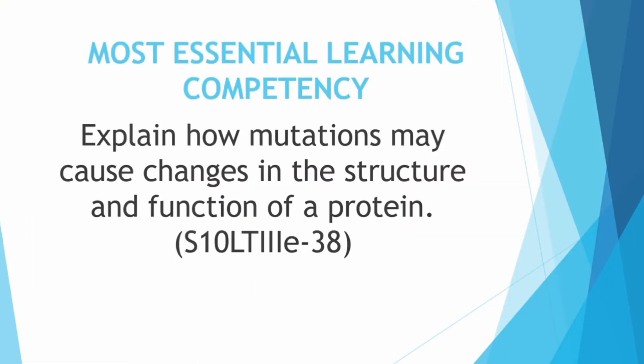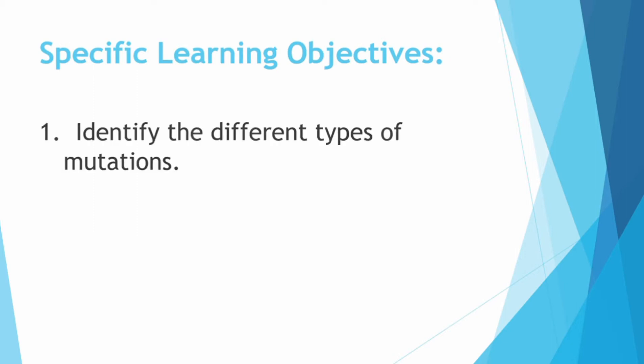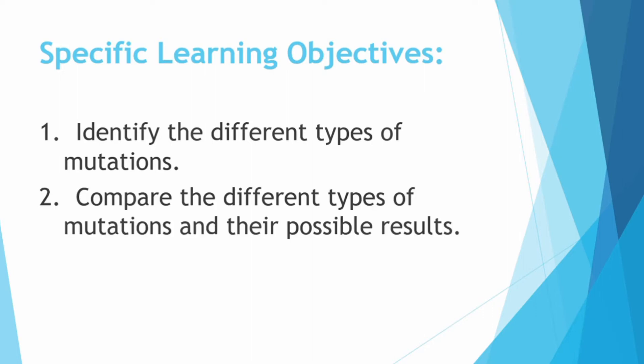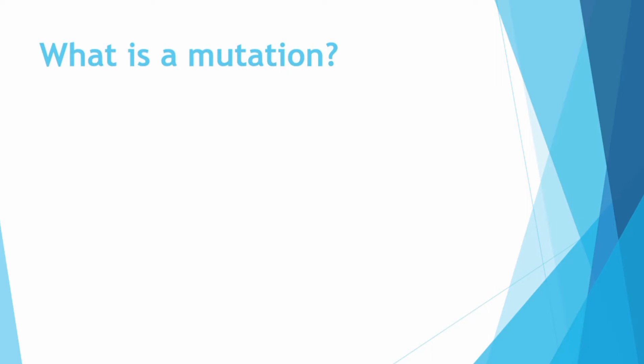This is our most essential learning competency: explain how mutations may cause changes in the structure and function of a protein. We have our specific learning objectives. First, identify the different types of mutations. Second, compare the different types of mutations and their possible results. And third, explain how mutations may cause changes in the structure and function of a protein.